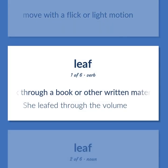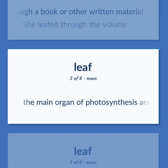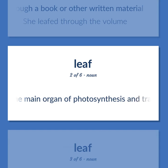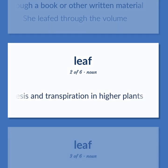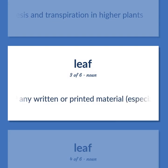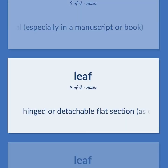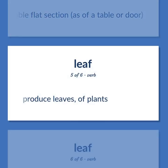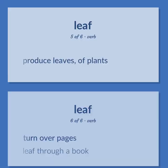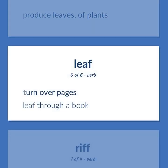Leaf: Look through a book or other written material — she leafed through the volume. The main organ of photosynthesis and transpiration in higher plants. A sheet of any written or printed material, especially in a manuscript or book. Hinged or detachable flat section, as of a table or door. Produce leaves, of plants. Turn over pages — leaf through a book.